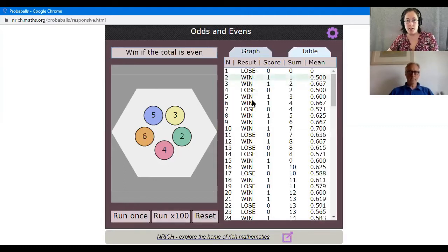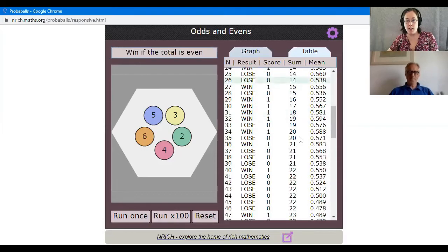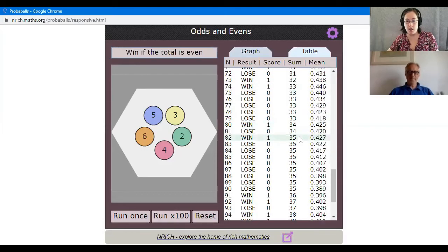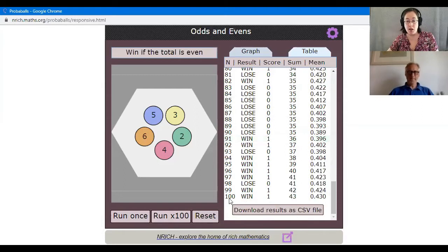This is telling you whether you lost or won on each of the turns, and then it's keeping a running total of how many times you won and how many times you lost. If I scroll all the way to the bottom, after a hundred turns it looks as if it came out even 43 times, which means that it would have come out odd the other 57 times. So this would predict that you had about a 43 percent chance of winning. Actually, if this is true, then you were quite lucky to win those first two games.